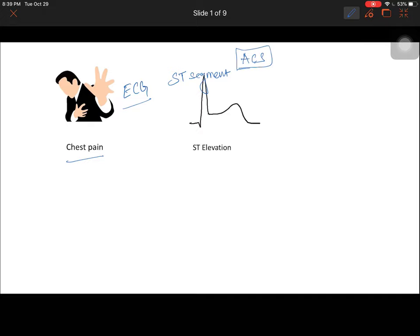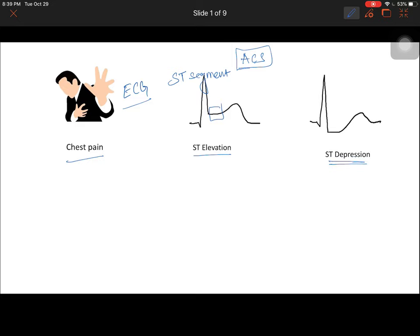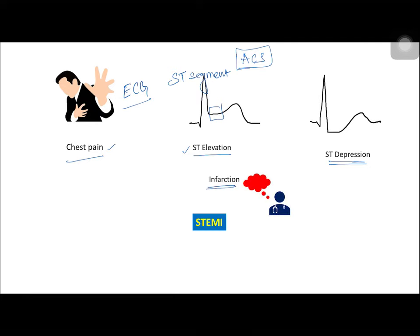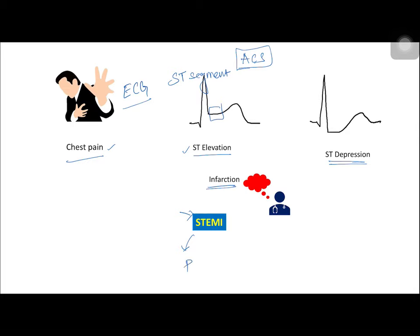In the case of ACS, the ST segment could either be elevated or depressed. A patient with chest pain and ST segment elevation — the most likely diagnosis is a myocardial infarction. The person is said to have ST segment elevated myocardial infarction, and the most appropriate treatment is a primary percutaneous coronary intervention as early as possible.